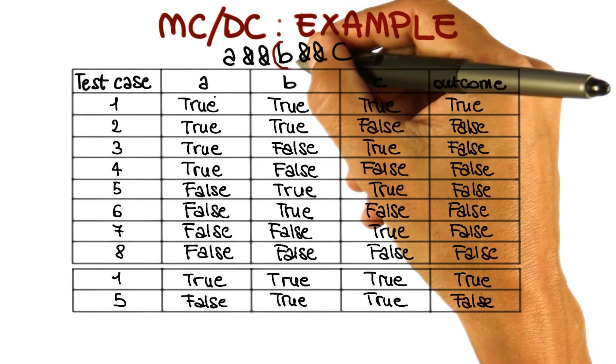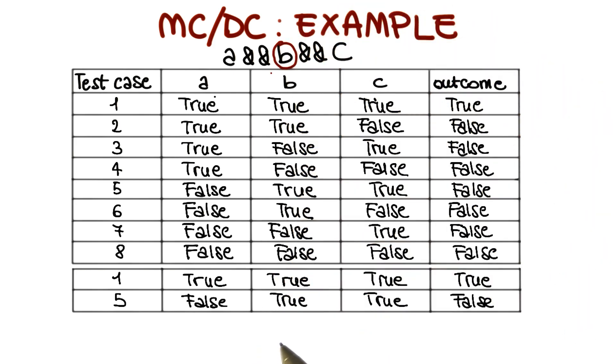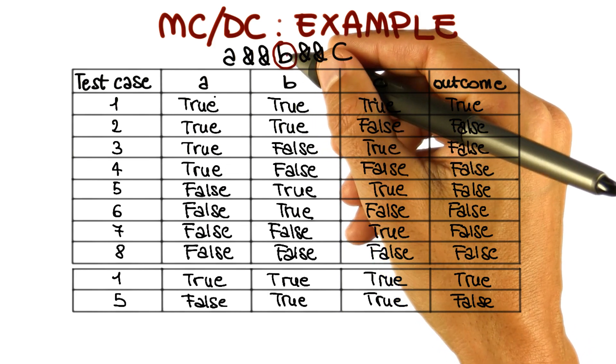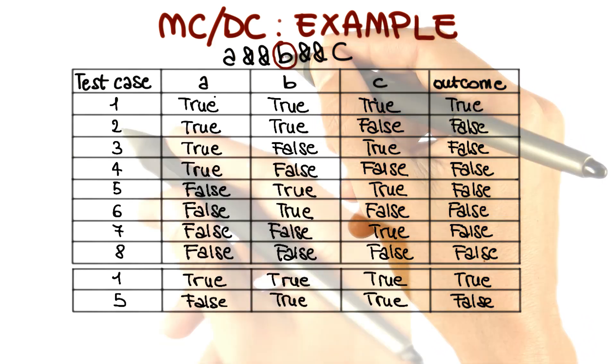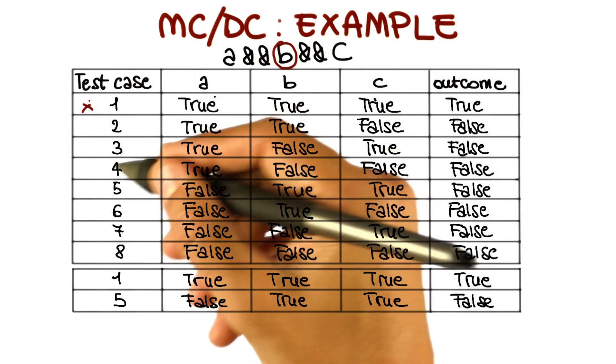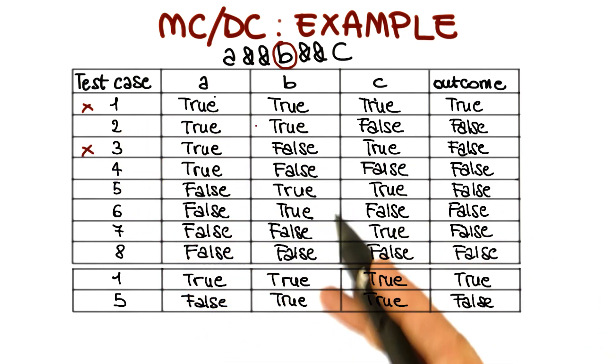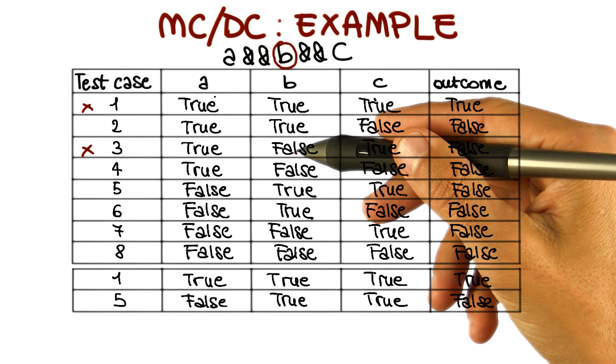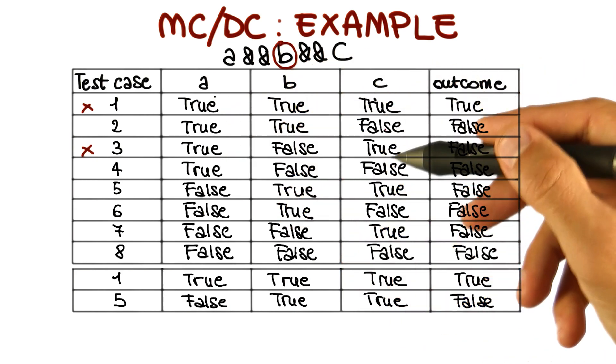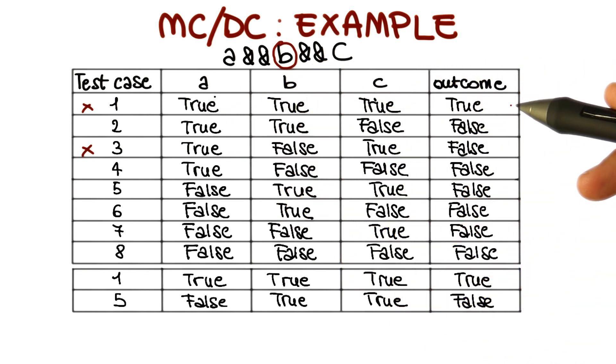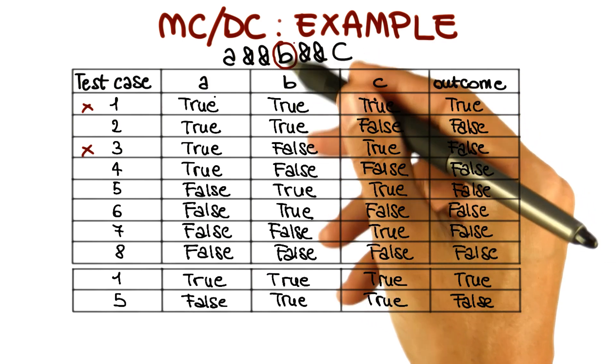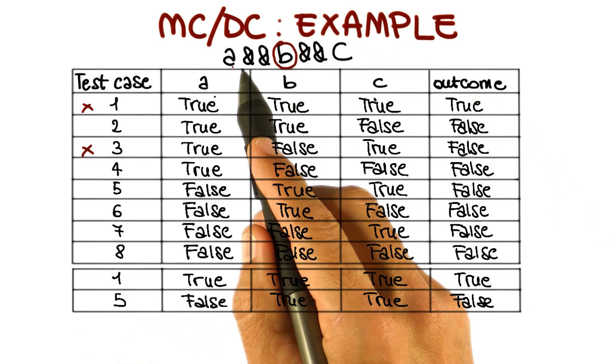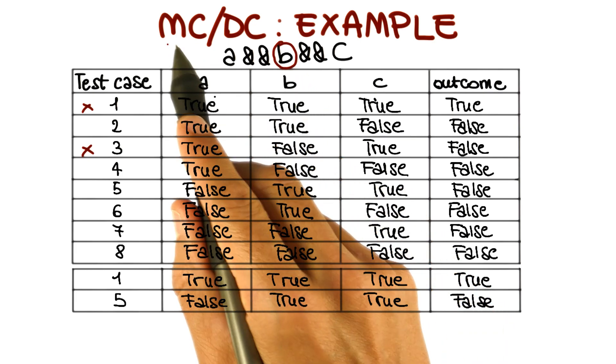Now let's focus on B, and let's try to find two test cases such that the value of B is the only value that changes between the two test cases, but the overall value of the predicate is different, the same thing we did for A. In this case, we can see that if we select test case number one and test case number three, we have exactly that situation. B is true in the first case, false in the second one. A and C don't change, but the overall value of the predicate changes. You can notice that even though we selected two test cases to test the two values, one we already had. So we only need three test cases overall to test A and B according to MC/DC.